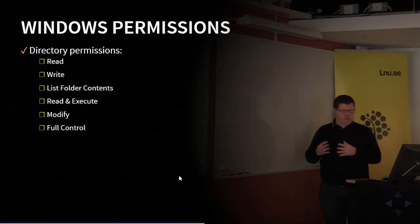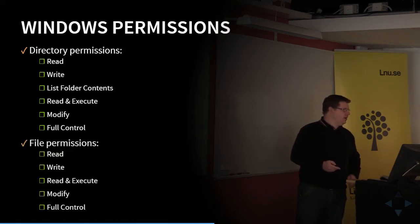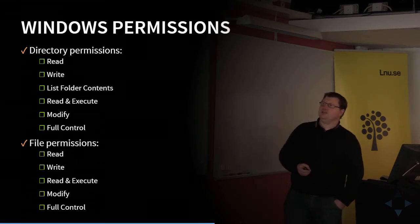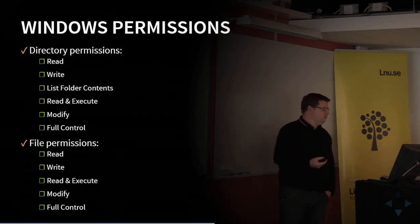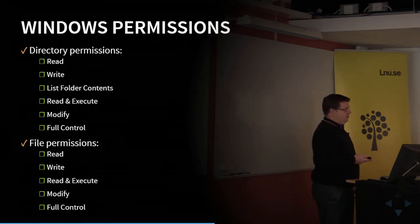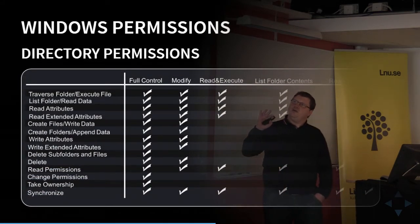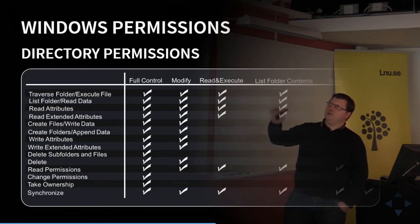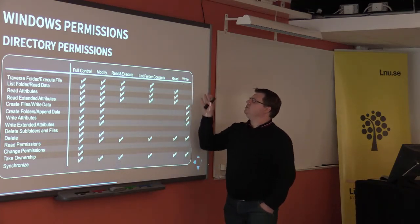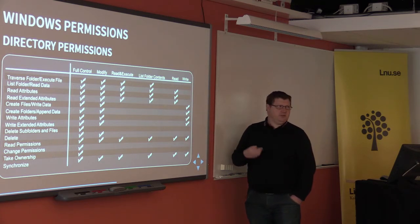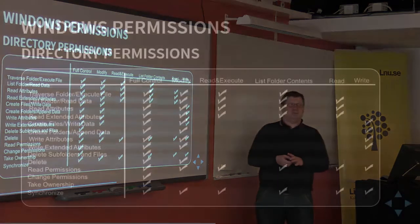Windows permissions for files are a bit different. Here we have different permissions for directories and files: read, write, execute, modify, full control, and on folders also list content. These are actually groups of permissions — they have been grouped into logical groups to make them easier to use. All of this is on the file system used on Windows called NTFS. If you have FAT32 or FAT16, this won't apply — it's the file system that has this feature, not the operating system.